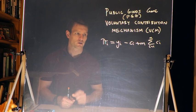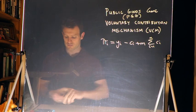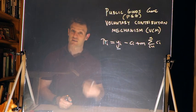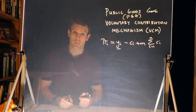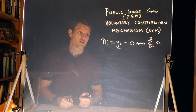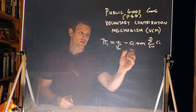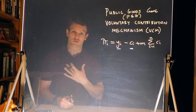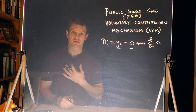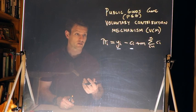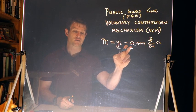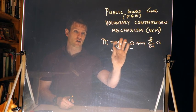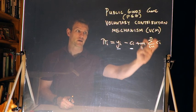So then how does that payoff structure work? Each player starts off with an endowment, y_i, for example, $10. They can then choose to contribute some amount of those $10 to the public good. And so then that contribution, c_i, would be subtracted from their endowment. So for example, if I had $10 as my endowment, and I then contributed $5, I would have 10 minus 5, that's what we have over here, and then I would be left with $5, but then $5 would be added to the public good.